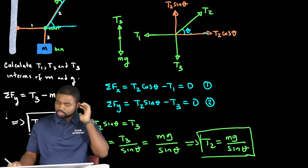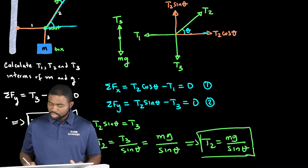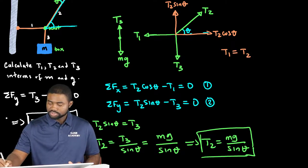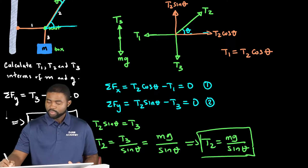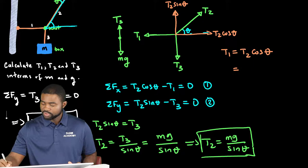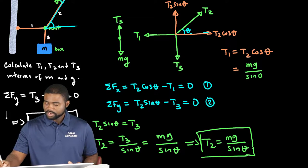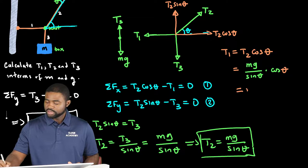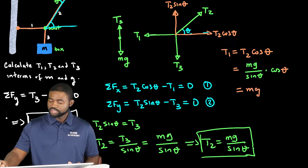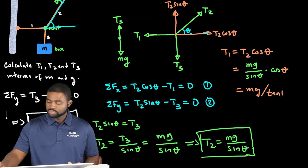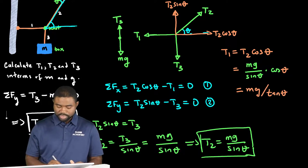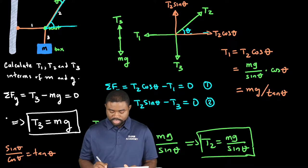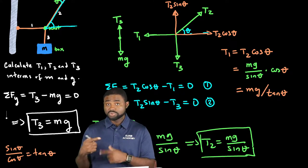So let's move on now to determine T1 from equation 1. You can see that T1 is equal to T2 cosine theta. T2 is mg divided by sine theta, and we are multiplying that with cosine theta. So we will have here mg cosine over sine. This will be tangent. Why do I say so? Keep in mind that sine over cosine is the tangent of theta. That means that 1 over tan is equal to cosine over sine.